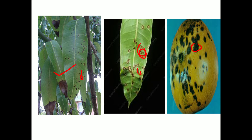Regarding perpetuation of anthracnose: the primary source of infection is infected plant debris, where spores of Colletotrichum fungus survive. The secondary source of infection is airborne conidia. For management, spray one percent Bordeaux mixture, or COC 0.25 percent, or Carbendazim 0.1 percent, or Captan 0.2 percent at intervals of 15 to 20 days until harvesting.